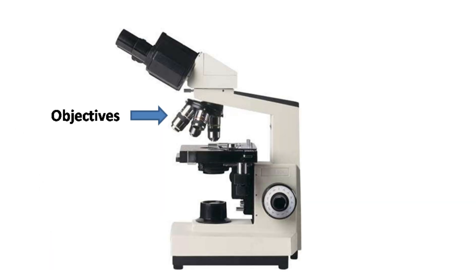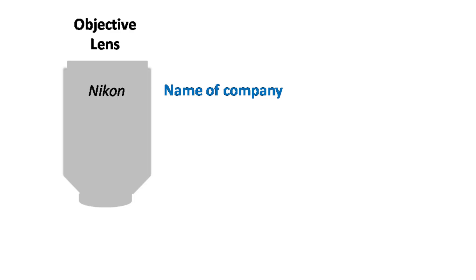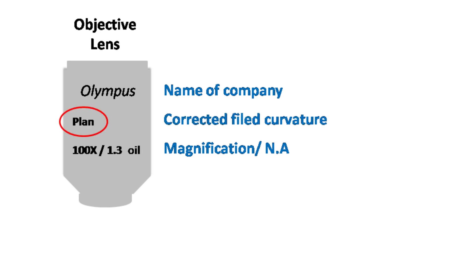Now let's talk about objectives. The objectives are the most important imaging components of the optical microscope and play a key role in magnification and resolution of the specimen. All the objectives have information written on it. This includes the name of the manufacturing company, magnification and numerical aperture. The term plan is used to indicate corrected field curvature.